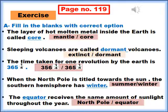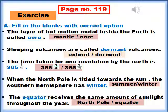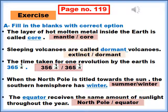Number four: When the north pole is tilted toward the sun, the southern hemisphere has winter. The options are summer and winter. The correct answer is winter. Number five: The equator receives the same amount of sunlight throughout the year. North pole or equator are the options. The correct answer is equator.